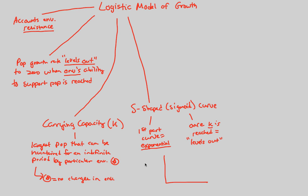So let's look at the graph. The y-axis is population size, denoted by capital N, and the x-axis is time, denoted by lowercase t. This is our sigmoidal curve — notice the S shape. The first part of the curve, up to a certain point, shows exponential growth. Then I reach a certain level, marked as a dotted line — that's K, my carrying capacity, the largest population that can be maintained for an indefinite period by a particular environment.